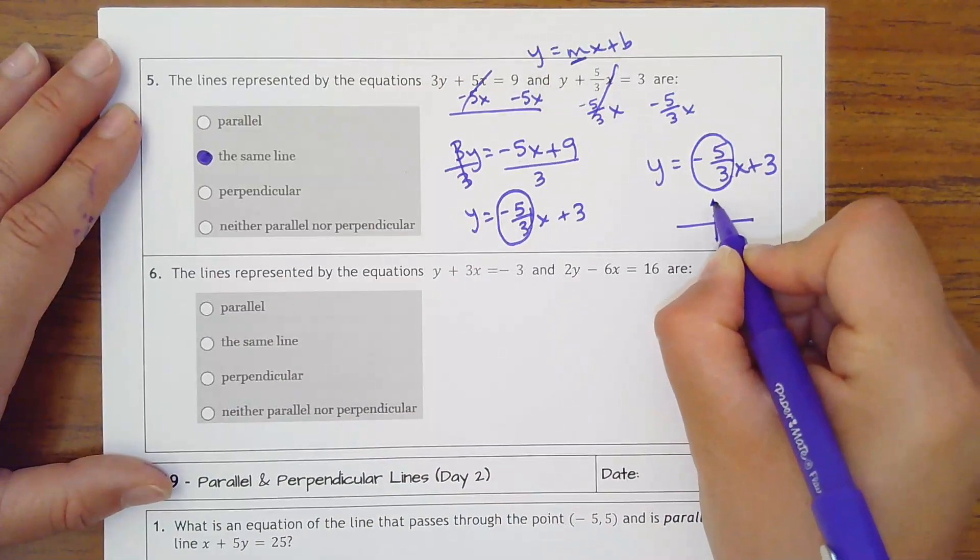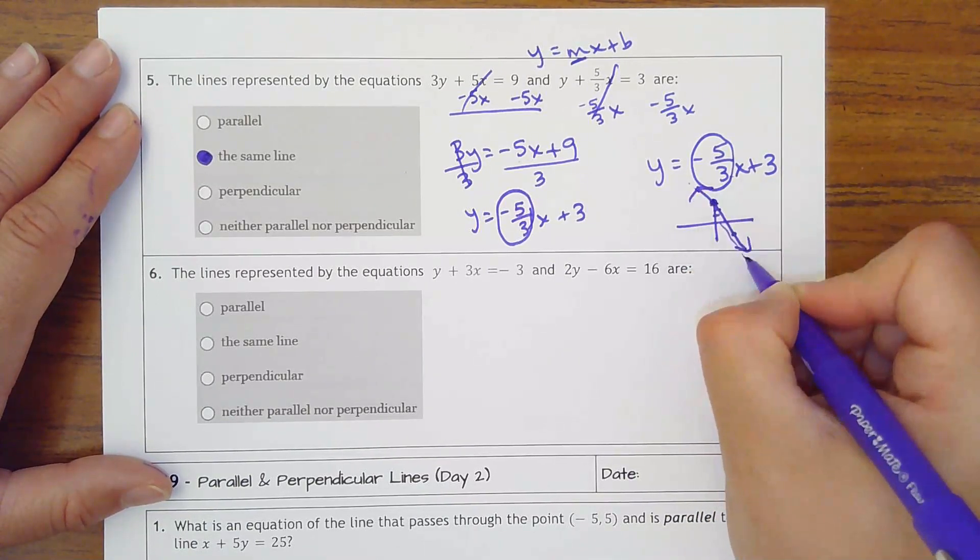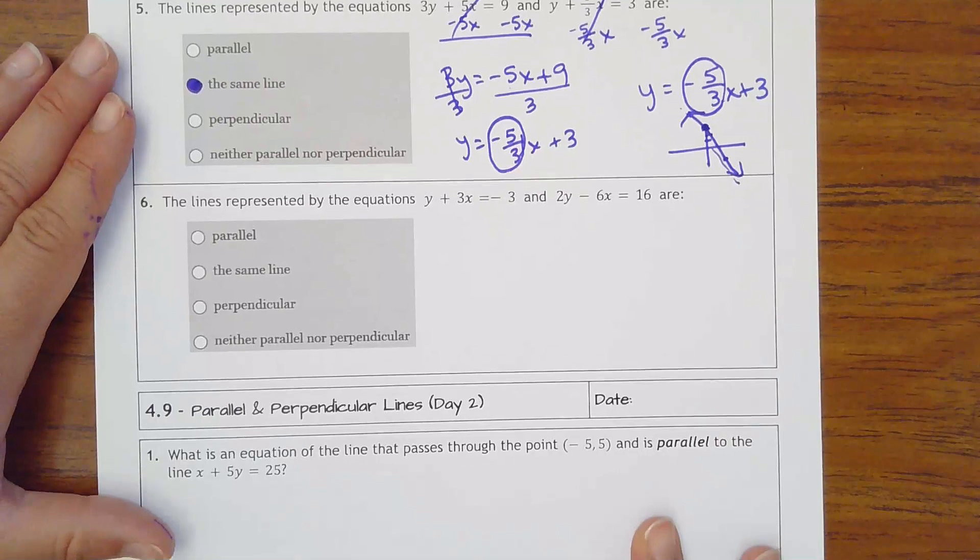If I were to graph them, they both have y-intercepts here. They go down 5, right 3. One line on top of the other. Okay, number 6. Same thing. You're going to get your y by itself.